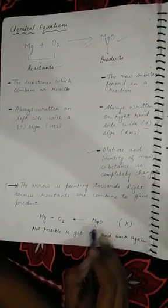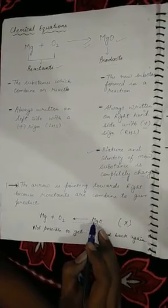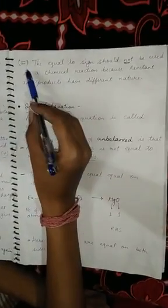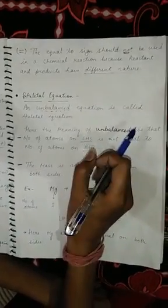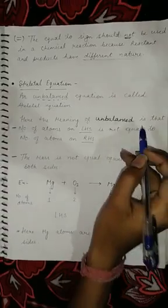Writing MgO giving Mg plus O₂ is a wrong way, and it is impossible to get magnesium from magnesium oxide again, so that is a wrong equation. Also, in chemical equations we never use an equal-to sign, because the reactants and products have different natures and are completely different from each other.